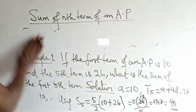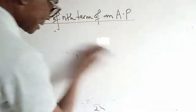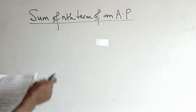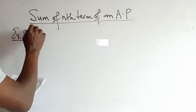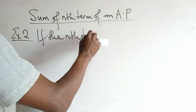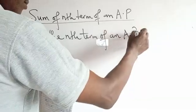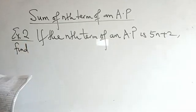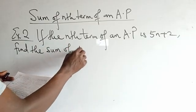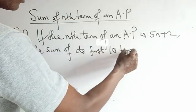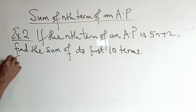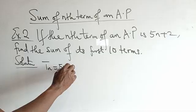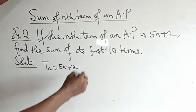Now let's look at another example. Example 2: if the nth term of an AP is 5n + 2, find the sum of its first 10 terms.